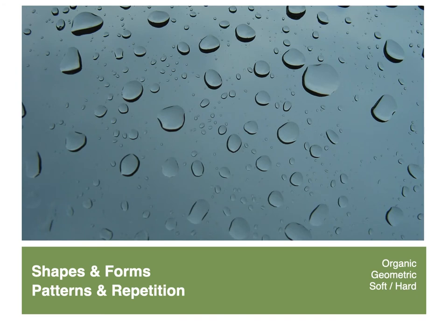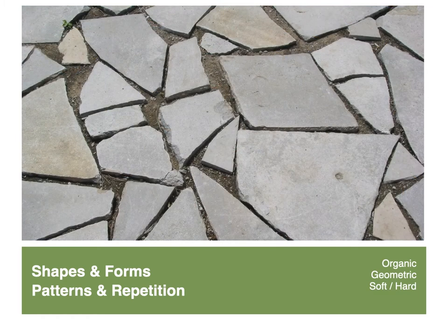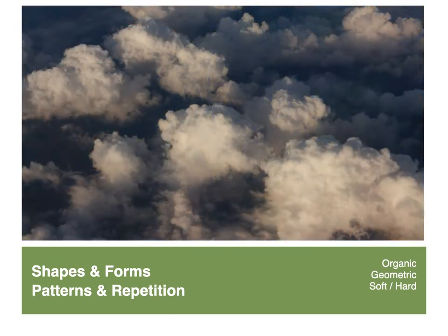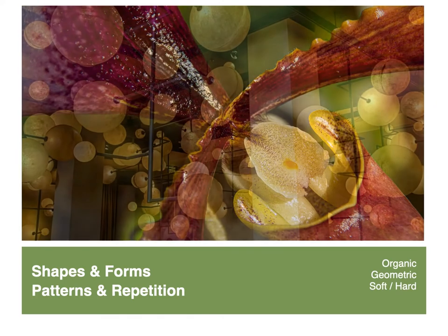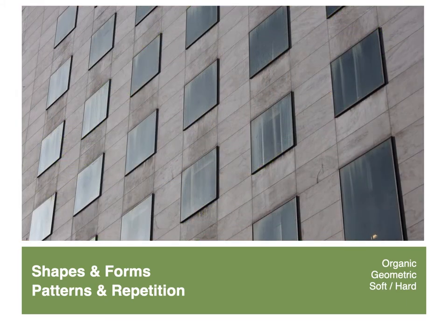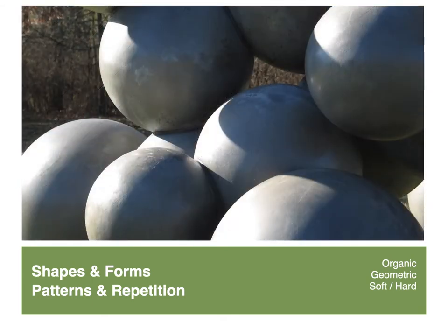Let's move beyond the line to more complex shapes. We tend to divide shapes into two categories: organic and geometric. Organic shapes are more free-form or natural—like leaves, clouds, flowers. Geometric shapes are based on the basic shapes of geometry: circles, triangles, squares, cylinders, cubes, spheres, and more.